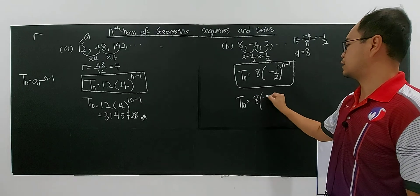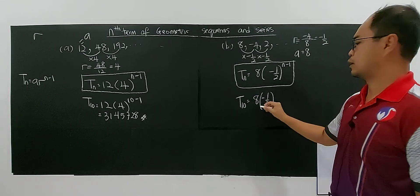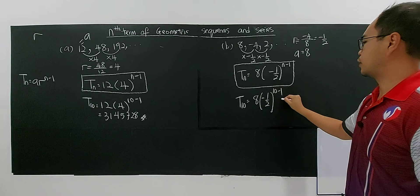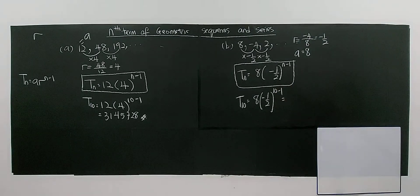Then you can use this one to find the 10th term. The 10th term is 8 times negative 1 over 2, 10 minus 1.